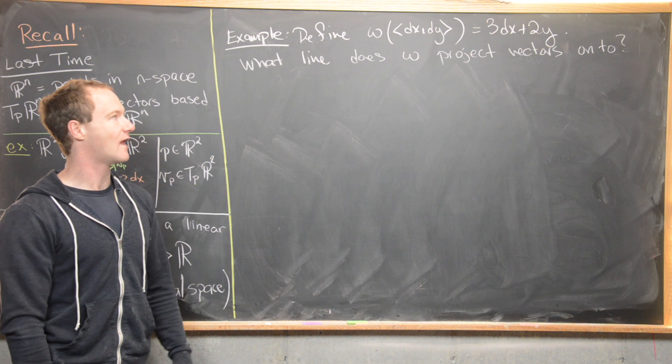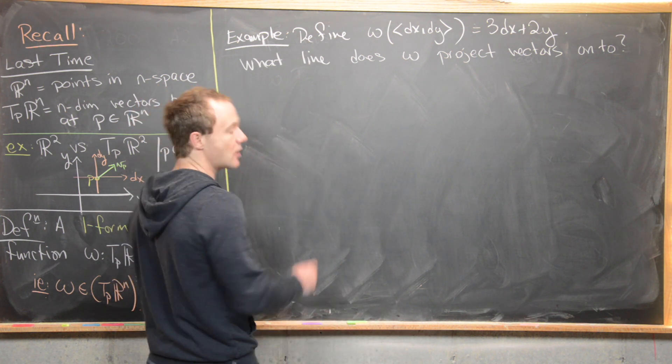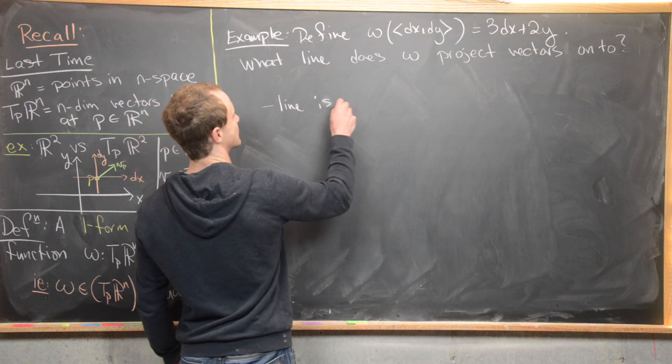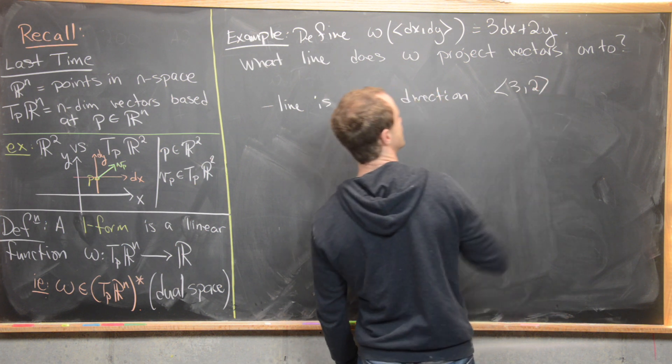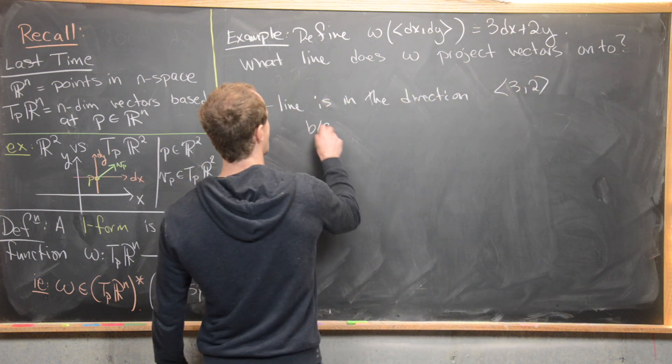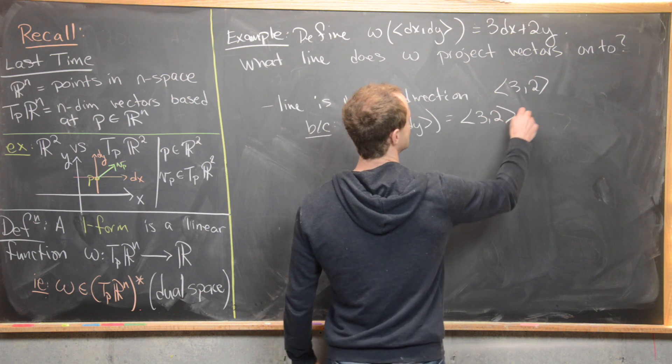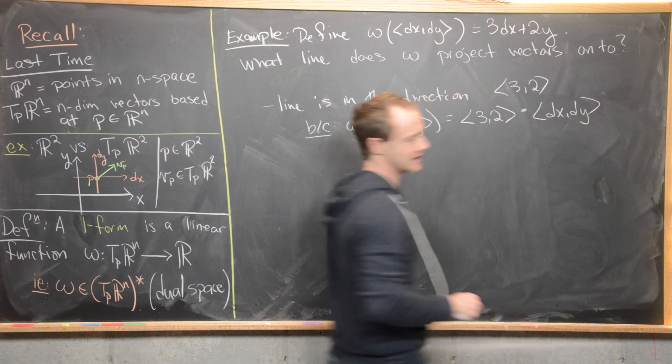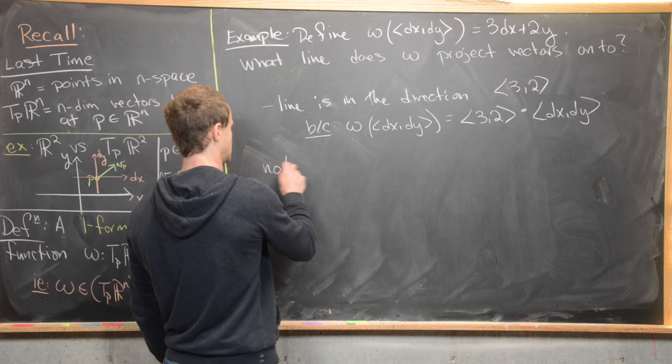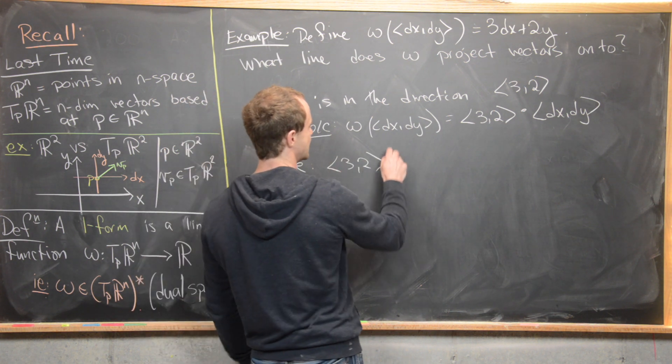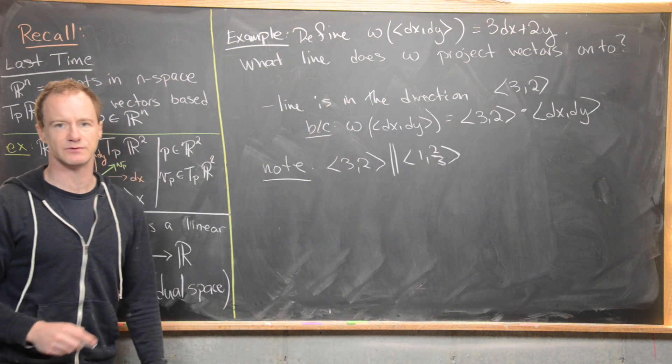And the question is: what line does omega project this vector onto? We can figure that out pretty easily because we know that the line is in a certain direction, and that direction is (3, 2). We can see that pretty easily because we have omega evaluated at (dx, dy) is going to be equal to (3, 2) dot (dx, dy) by what we had seen before. So it's going to project it into that direction. And so notice that (3, 2) is parallel to the line (1, 2/3). That's pretty easy to see, we just take a scalar multiple of that.